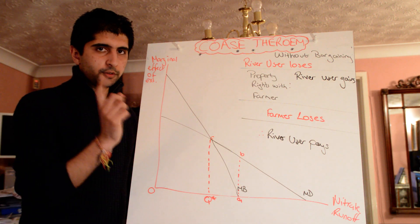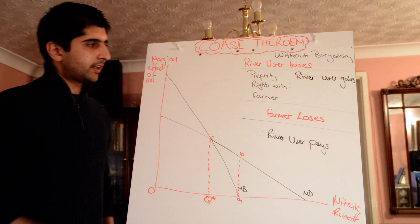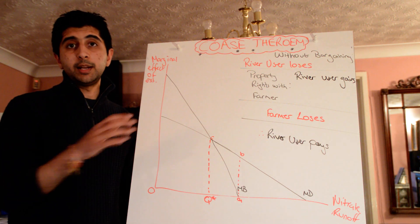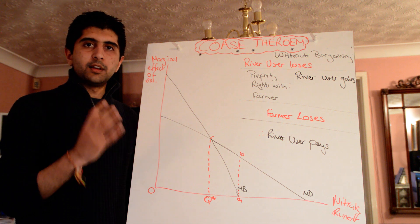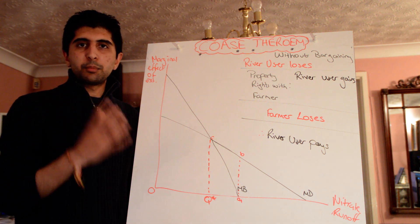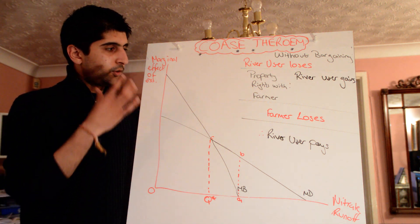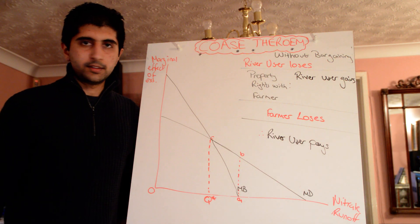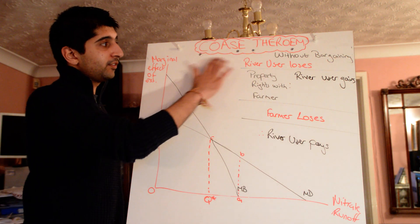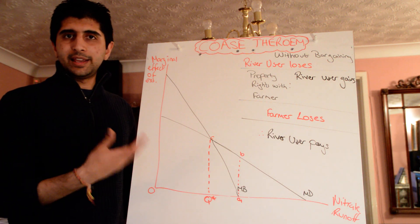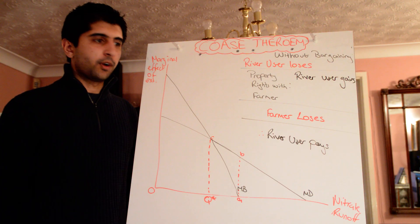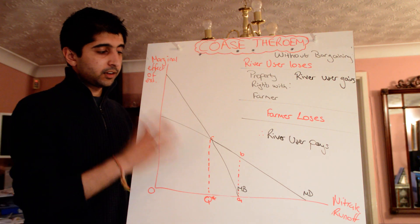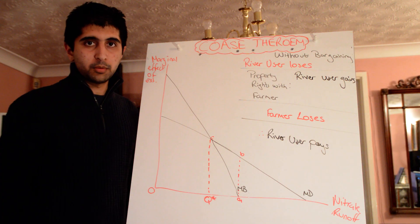Ronald Coase argues something else. He says when there are negative externalities occurring in a market, that's often because there aren't property rights allocated to solve the existence of these negative externalities. He says if there were well-defined, allocated property rights, the market would solve itself, and negative externalities wouldn't cause a major problem.